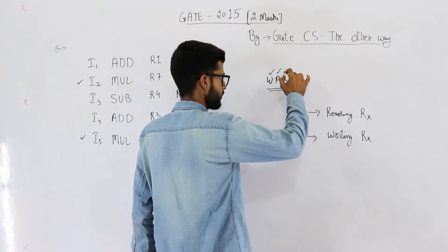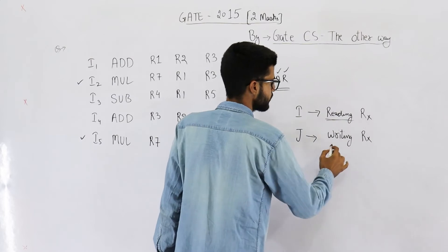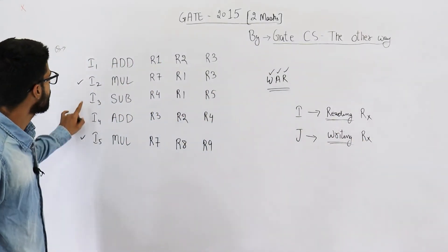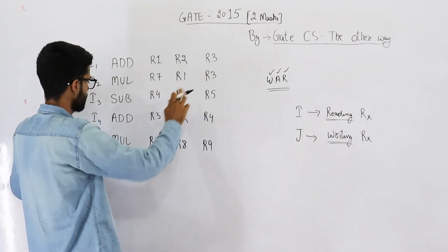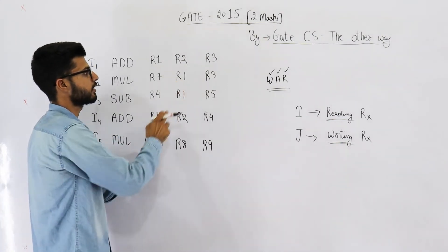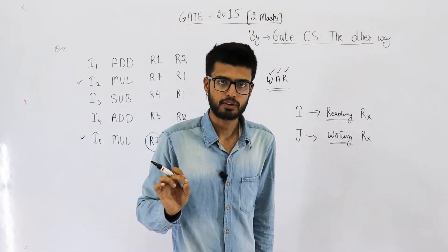That means read happens first. So read happens first, then you write. Now I2 is reading R1 and R3, but I5 is writing R7. So there is nothing in common. That means statement number one S1 is false.